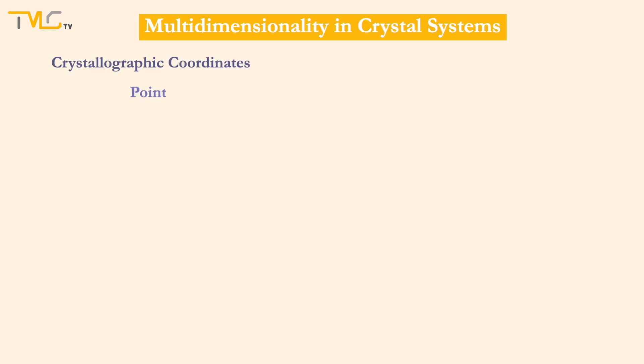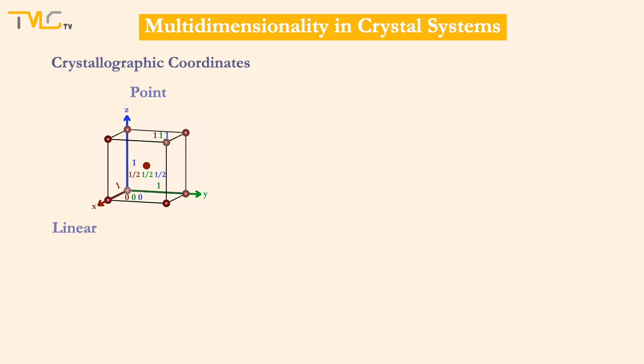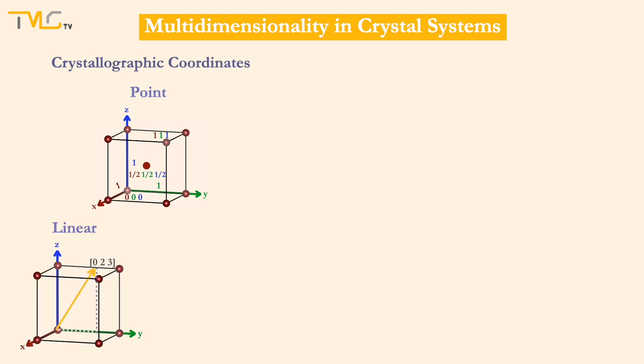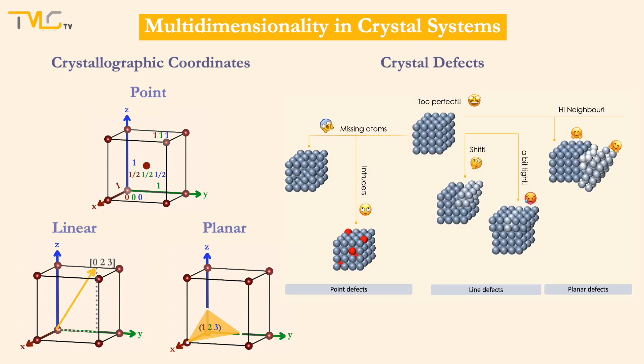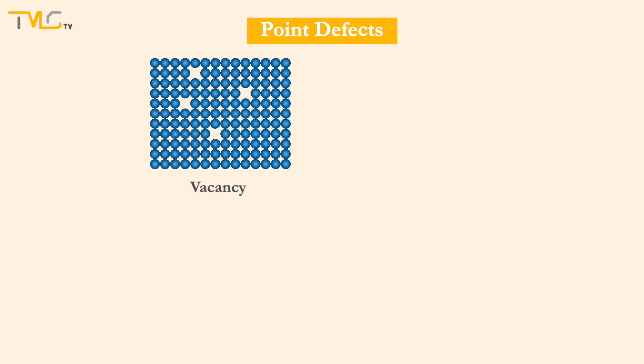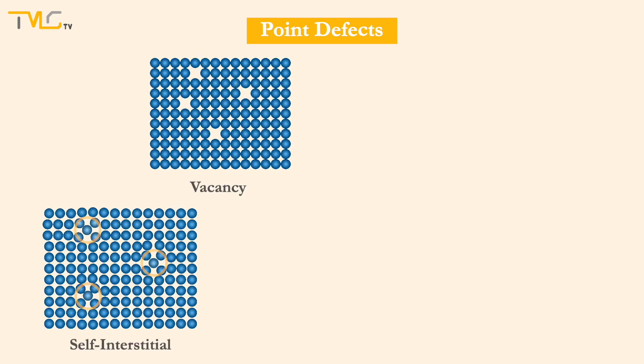The multidimensionality we have mentioned for crystallographic coordinates in the previous video is also true for crystal defects. There are zero-dimensional, one-dimensional, and two-dimensional crystal defects, which are called point, linear, and interfacial defects, respectively. Let's start with zero-dimensional crystal defects. Point defects are usually classified as vacancies, self-interstitials, or impurities.